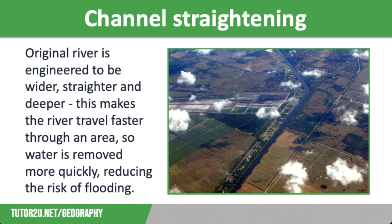Channel straightening is also a very expensive solution, requiring a lot of engineering, and the additional dredging needed downstream will also be expensive. There is also an impact on the river ecosystem, which can destroy habitats and lower biodiversity. For example, straightened rivers are often lined with concrete, which is unnatural and stops animals burrowing into the riverbank.